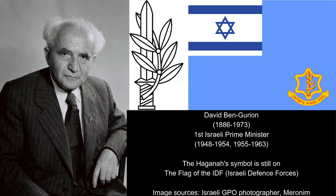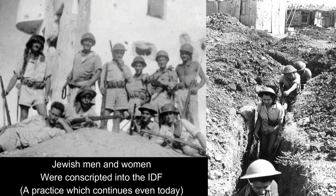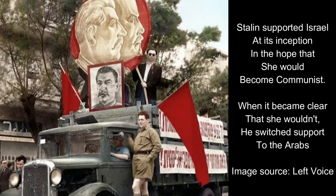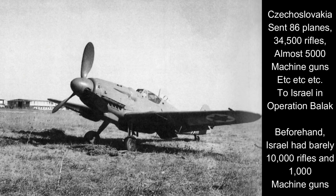David Ben-Gurion, the future first prime minister of Israel, reorganized the Israeli forces. He merged the Haganah and the Irgun — rival Jewish militaries — to form the Israeli Defense Force, the IDF. He also imposed compulsory conscription on all Jewish men and women. Golda Meir raised funds from America, and they also received support from the Soviet bloc — Stalin was in favor of the Zionist movement — who used their proxy in Czechoslovakia to send arms to Israel.